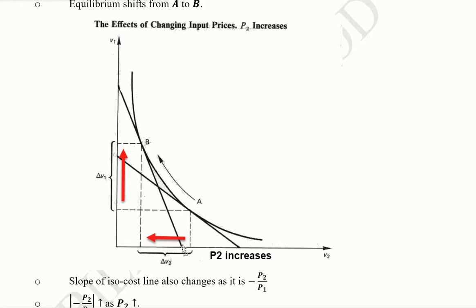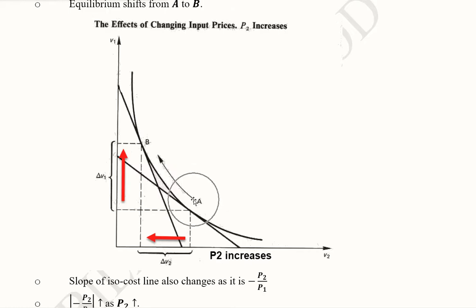This was the initial intercept for V2, now this is the new intercept for V2. This was the initial intercept for V1 and now this is the new intercept for V1. Joining the new intercepts, we get the new isocost line which is tangent to the isoquant at point B. So this becomes the new equilibrium instead of point A.